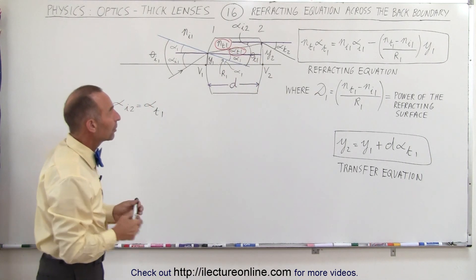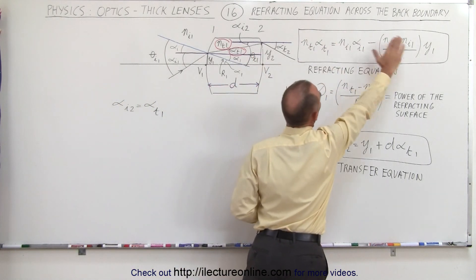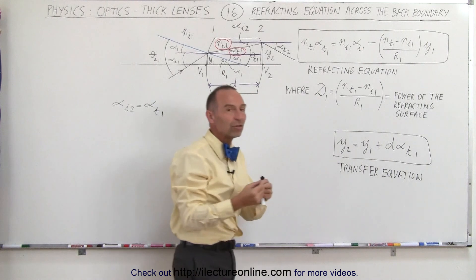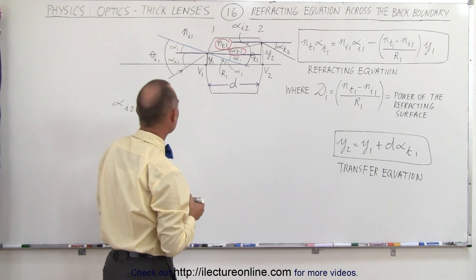Now what we're going to do to come up with the refracting equation of the second boundary is we're going to use this as a template but just change it according to the numbers and the letters that we need to use for the second boundary.